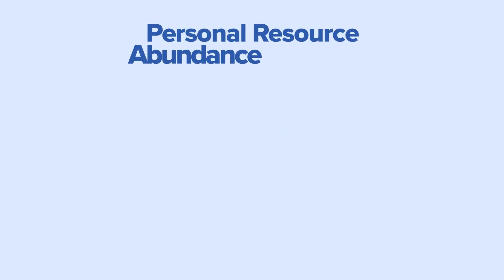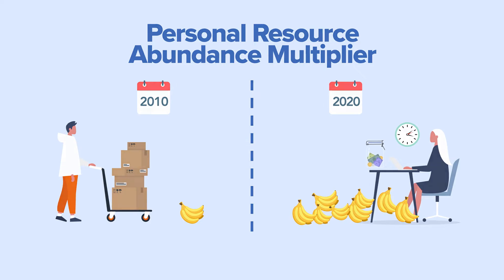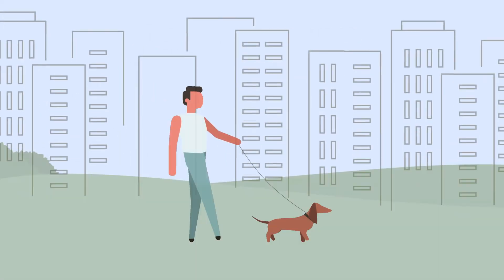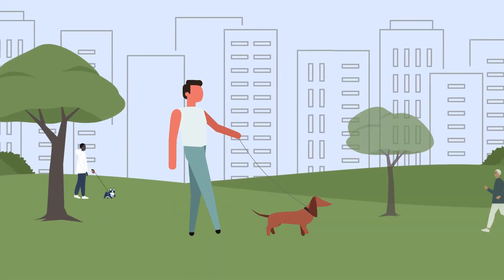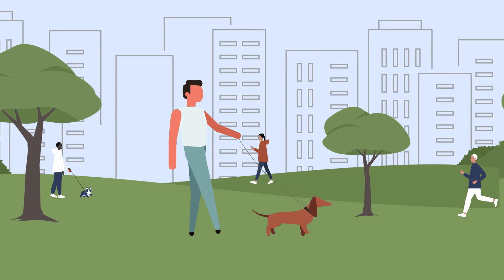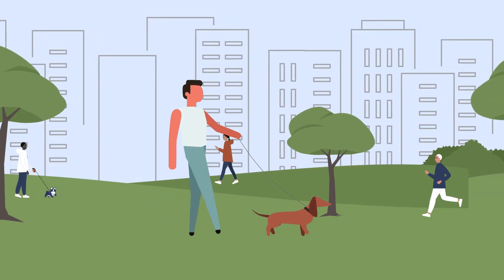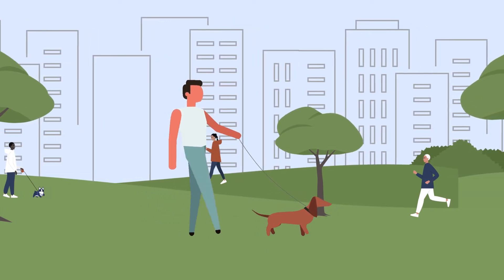The Personal Resource Abundance Multiplier tells you how many units of a resource the same amount of working time buys at different points in time. You can also think of the multiplier as showing how much more or less abundant a resource has become from the perspective of an individual over time.